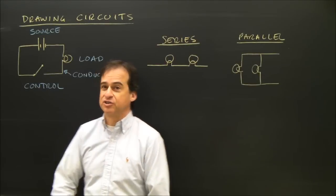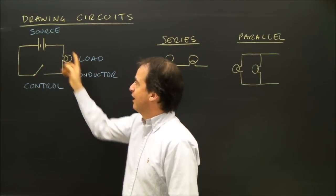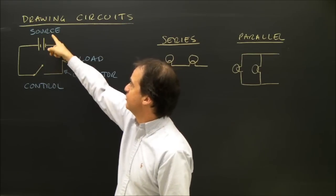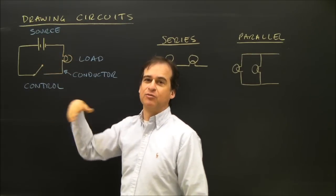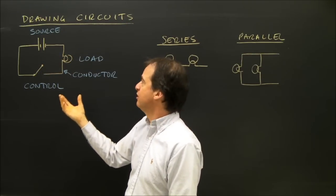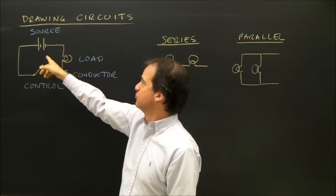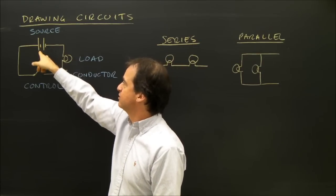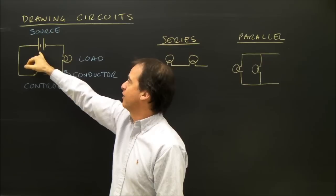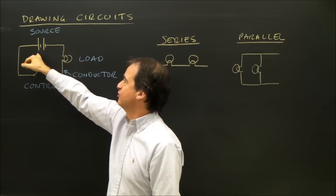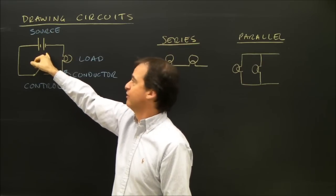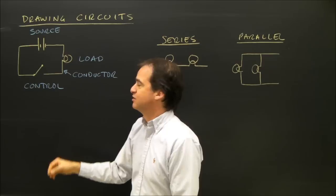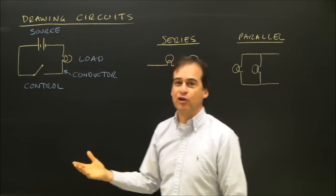There are four main parts to a circuit. Any simple circuit has a source — that's where the electricity flow comes from. In this case, I've drawn these lines like this. Those indicate a battery because I've got two cells there. So my source is two cells.